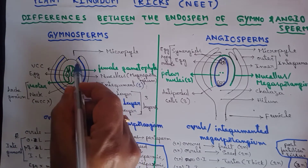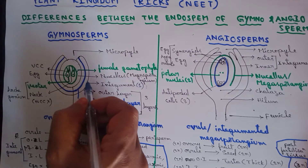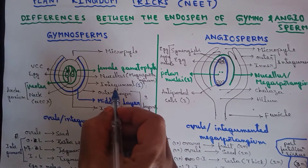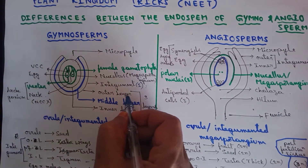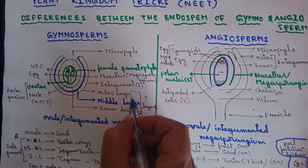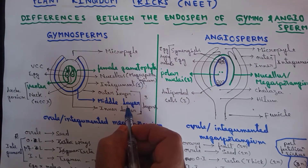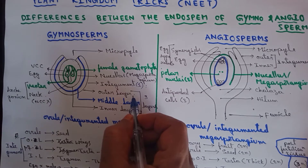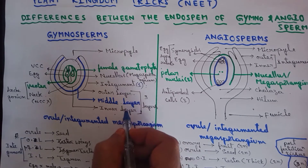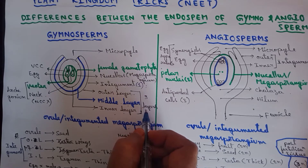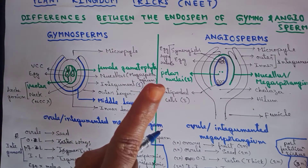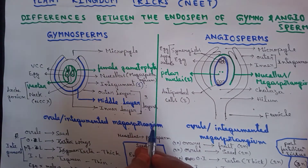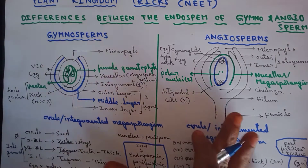The nucellus is covered by only one integument. This integument is three-layered: outer layer, middle layer, and inner layer. The outer layer is thin, the middle layer is thick, and the inner layer is thin. So it is a three-layered integument — one integument but with three layers.